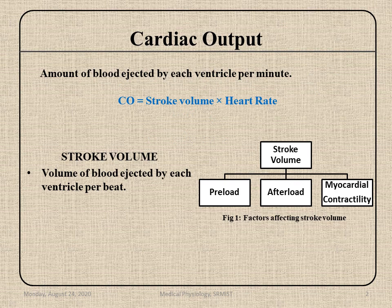So what is cardiac output? Cardiac output is the amount of blood ejected by each ventricle per minute. Cardiac output is the product of stroke volume and heart rate. Factors which are affecting stroke volume and heart rate will be affecting the cardiac output also.